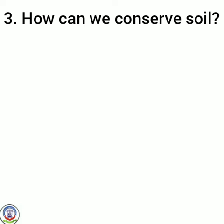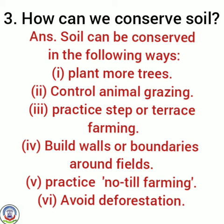Number 3 — how can we conserve soil? Answer: Soil can be conserved in the following ways — plant more trees; control animal grazing; practice step and terrace farming; build walls and boundaries around the fields; practice no-till farming; avoid deforestation यानि पेड़ों का काटना उसे रोकना चाहिए।